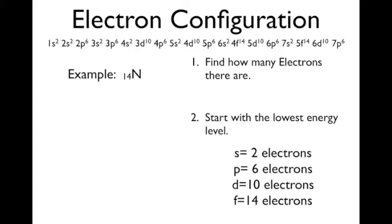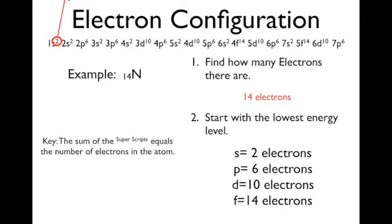What we need to do first is find out how many electrons there are. Because this is neutral, it has the same number of electrons as it does protons. So nitrogen has 14 protons, which means it's going to have 14 electrons. Now these numbers up here, the superscript, those represent electrons. And what we need to do is we need to sum up all the superscripts to equal 14 electrons in this example.